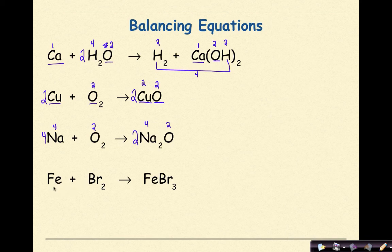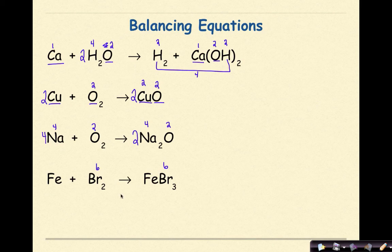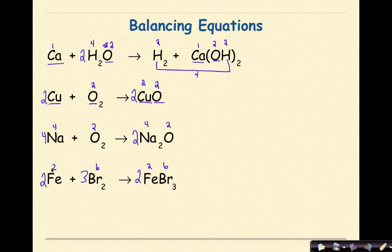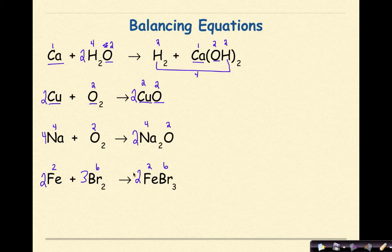Next equation: 1 Fe, 1 Fe; 2 Br's on one side and 3 Br's on the other. I need a common number between 2 and 3, which is 6. So 3 times 2 gives me 6 Br on one side, and 2 times 3 gives me 6 Br on the other. Bromine is balanced. Now I go back to balance iron: I have 2 Fe on the product side, so I put a coefficient of 2 in front of Fe. Checking: 2 Fe, 2 Fe; 6 Br, 6 Br — all balanced.